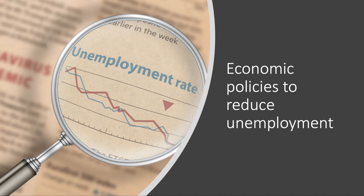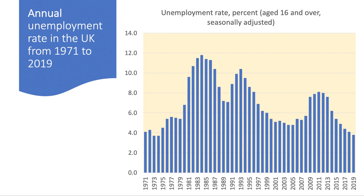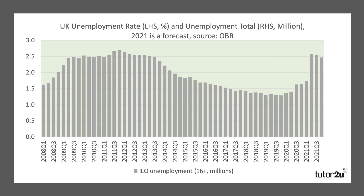Welcome to an update video recorded in February 2021 on economic policies designed to bring down unemployment. In the recessions of the early 1980s and 1990s, the UK unemployment rate exceeded 10%, as we can see from this chart. This did not happen after the global financial crisis — unemployment peaked at over 8% — but there are significant fears that the lingering effects of the pandemic could again cause unemployment to increase quite sharply.